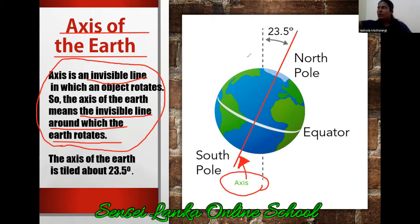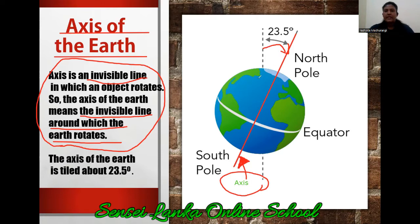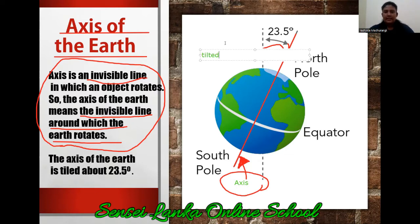So now, can you see this axis is not a direct line? Can you see a kind of an angle here? It is a bit tilted. What is the word we use for that? Tilted. It is a little bit tilted. So how many degrees?